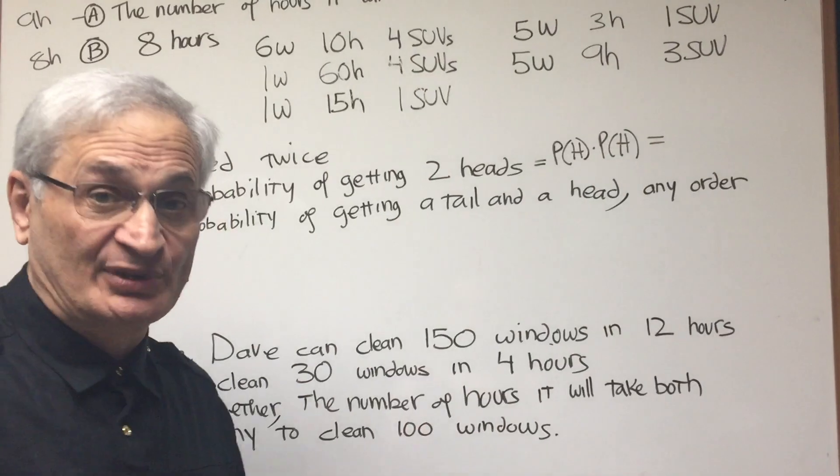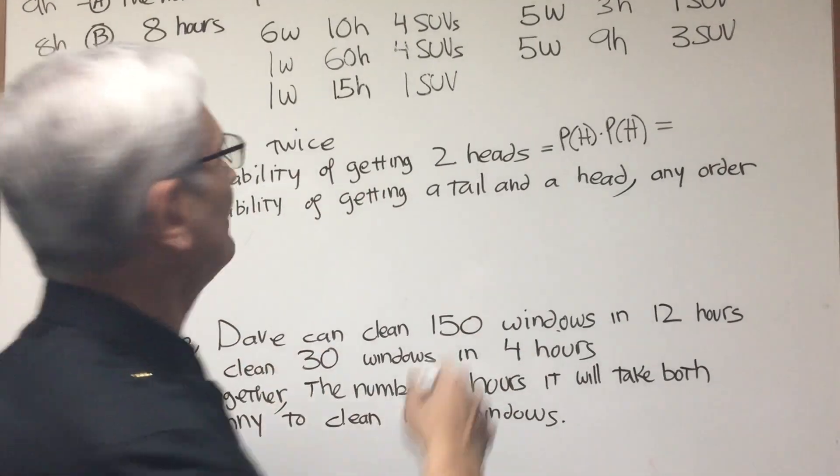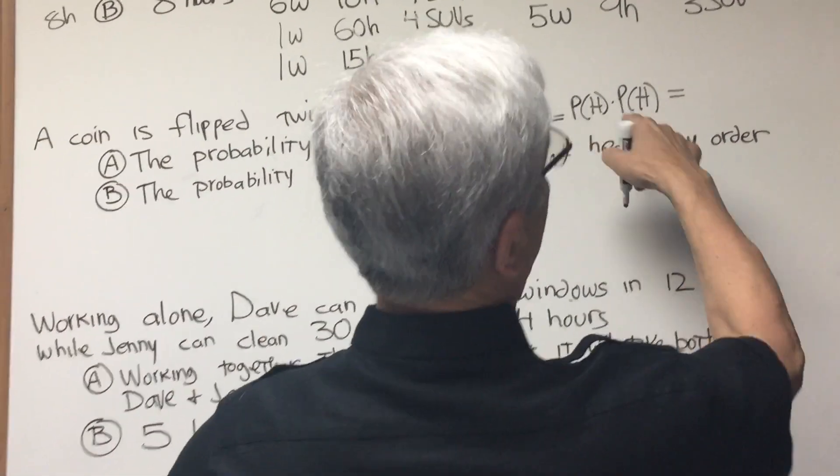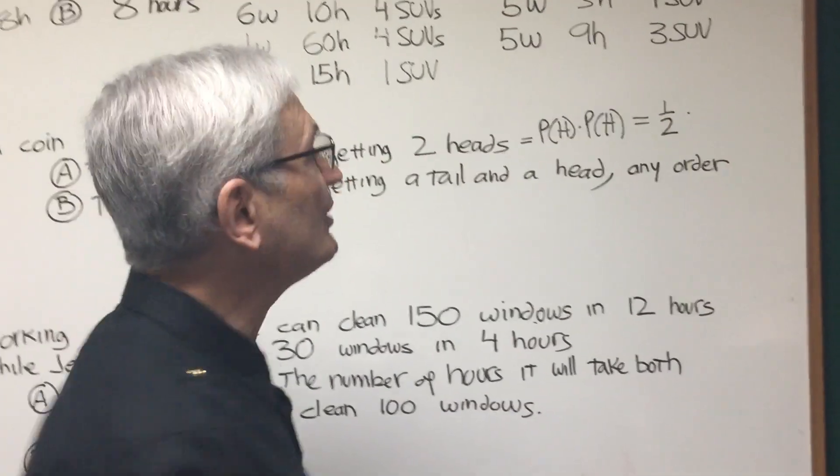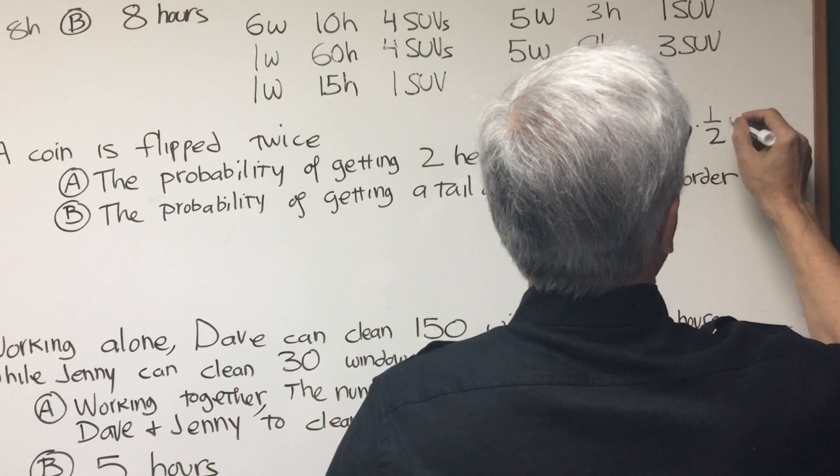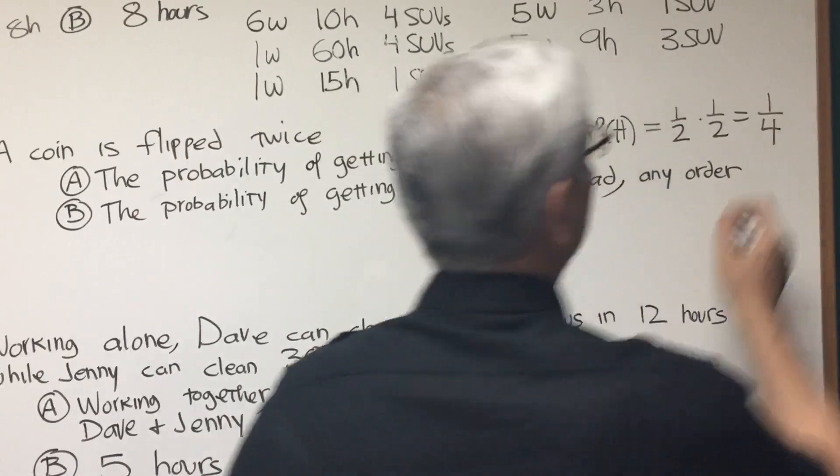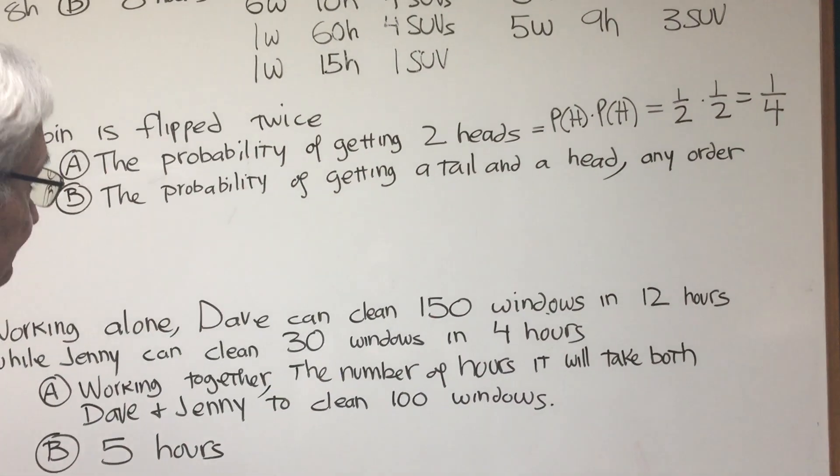The probability of getting two heads is the probability of a head times the probability of a head. Okay, we're going to multiply because we want the two outcomes to come one after the other. The probability is one-half of the first head, one-half of the second head, and therefore the probability of getting two heads is one out of four, one-fourth.